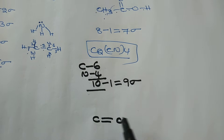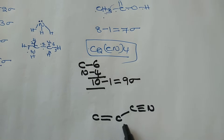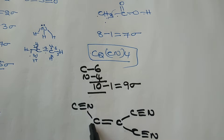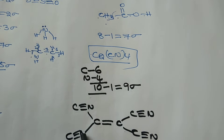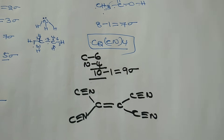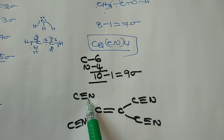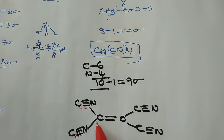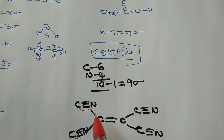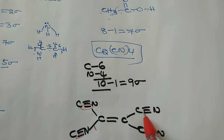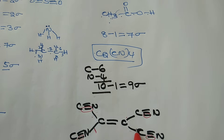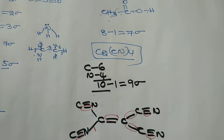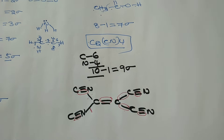Drawing the structure: C double bond C, then four C triple bond N groups attached. Now counting: the C=C gives one sigma bond; each C–C single bond to CN is one sigma bond (four total); each C≡N gives one sigma bond (four total). Counting: one, two, three, four, five, six, seven, eight, nine — nine sigma bonds confirmed.